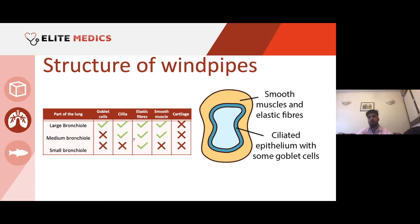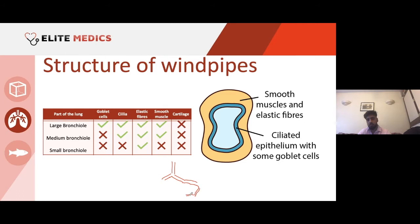This is very important — you want to see how the components reduce in number as you move down. In large bronchioles, coming from the principal bronchi, there's no cartilage. In medium bronchioles there are no goblet cells. By the time you reach the small bronchioles, there is nothing apart from elastic fibres. So the large bronchiole has smooth muscle, elastic fibres, and ciliated epithelium with some goblet cells; medium and small bronchioles progressively lose goblet cells.